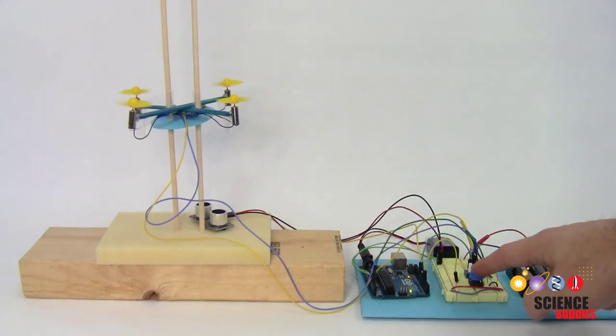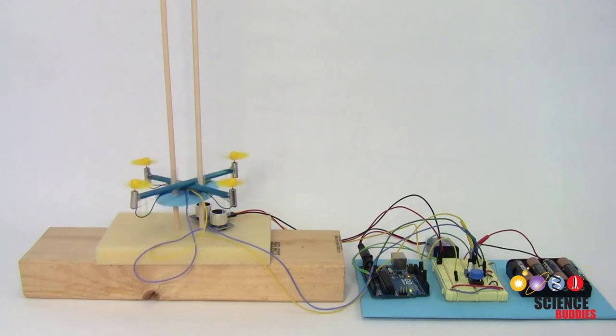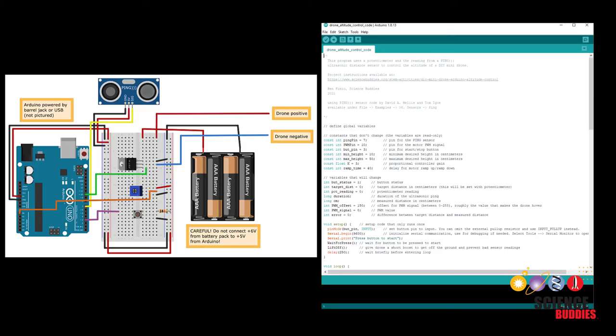You can add other features to your project like a button for gentle takeoff and landing. For a complete circuit diagram and working example code so you can get started with your own project, visit the link in the description below this video.